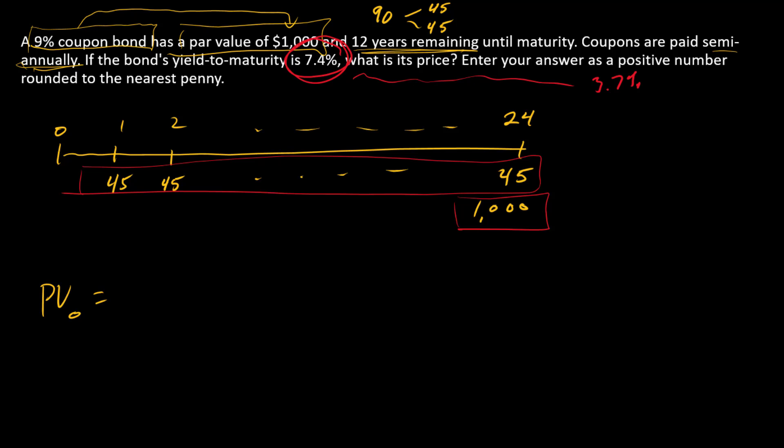So if you want to write this as a formula, we have a 24 in the exponent here for our annuity factor, and then we have the present value of the lump sum payment at maturity. And so we can find the present value there.